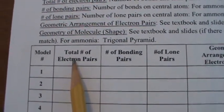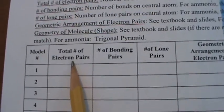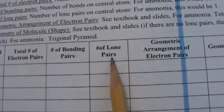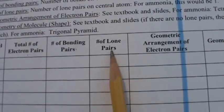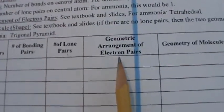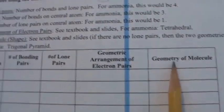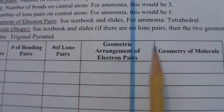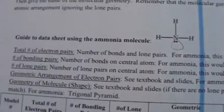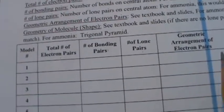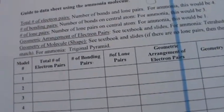The total number of electron pairs includes all of them — bonding pairs and lone pairs. If there are no lone pair electrons on the central atom, that will be zero. Then you fill in the geometry of the electron pairs and the geometry of the molecule. If there are no lone pairs, these will be exactly the same. Up here is an example of how to fill this in for ammonia.